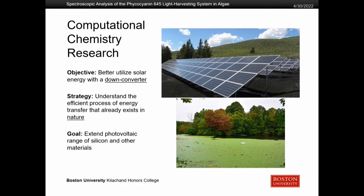My research project was a computational chemistry research project, and this differs from a lot of other chemistry you may be thinking of. So instead of using beakers and Bunsen burners, we actually use computers to model chemical systems. The objective of my specific research project was to better utilize solar energy with a down converter. What a down converter does is it takes something of higher energy and converts it into a lower, more usable form of energy. These naturally occur in nature in things like photosynthetic organisms.